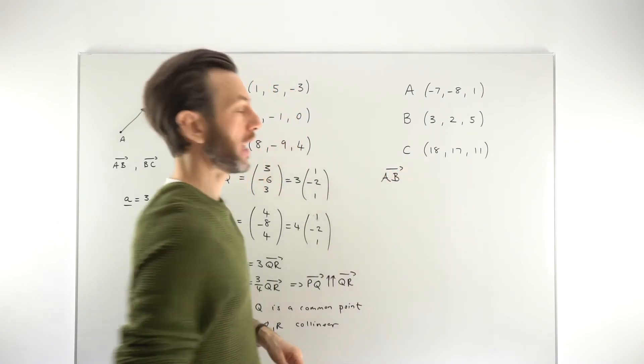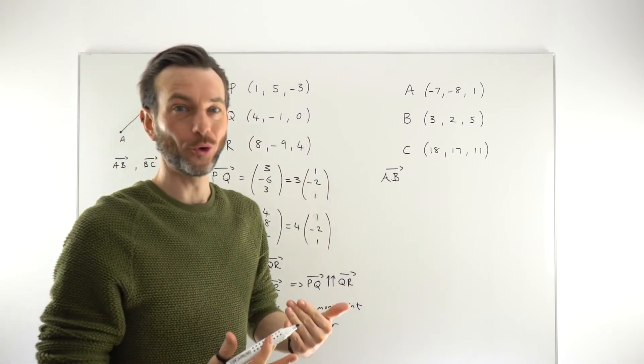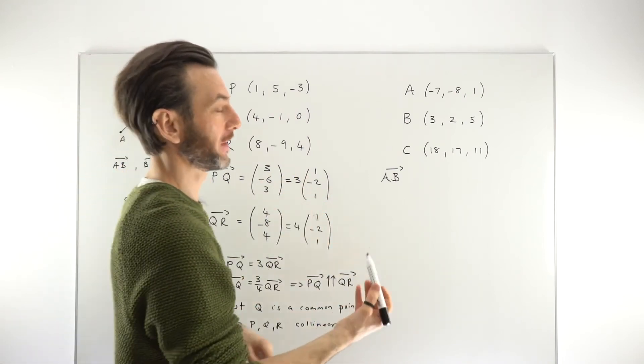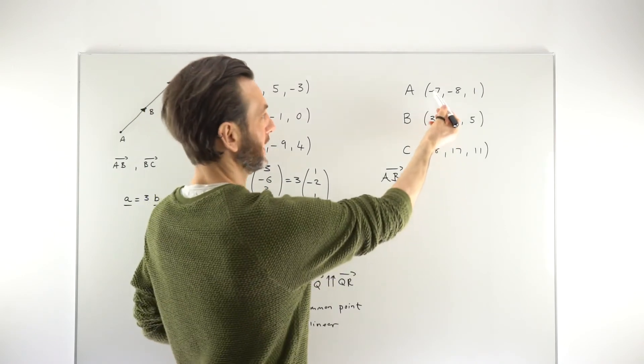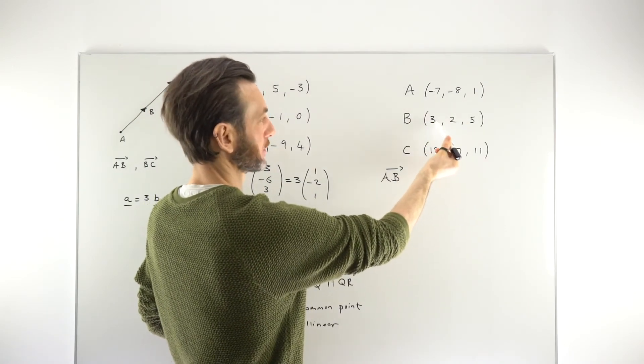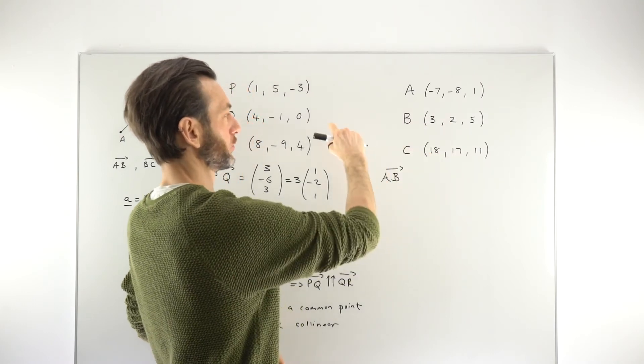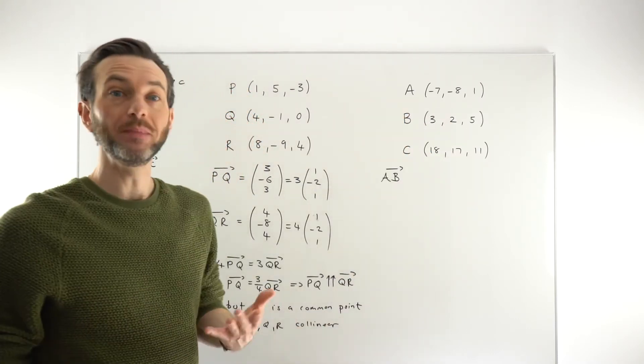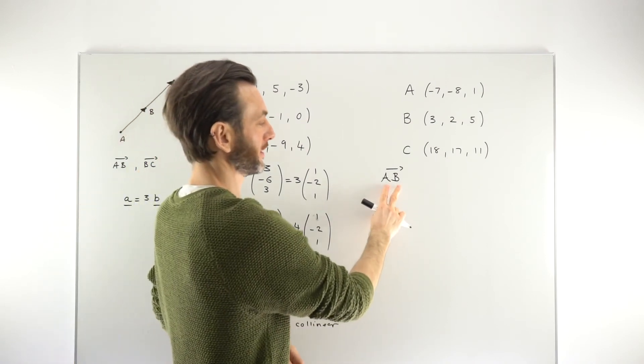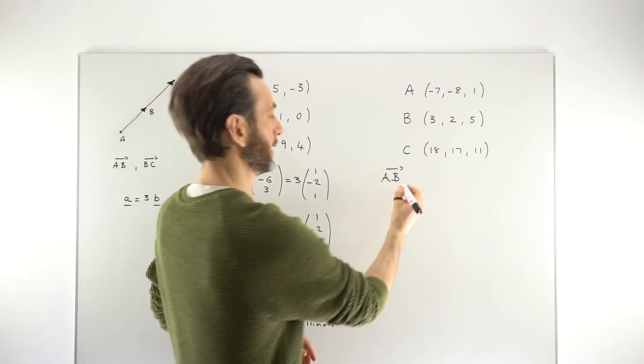So again, just quickly checking that your alphabetical order of your points is also the correct actual order. So minus 7 to 3 to 18, that must lie therefore in the middle. So A to B to C. So our line does go A to B to C. So that means, and that's really, really important, because that means we're going to make the vectors AB, and then BC.